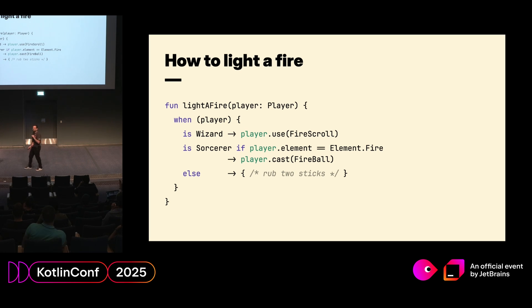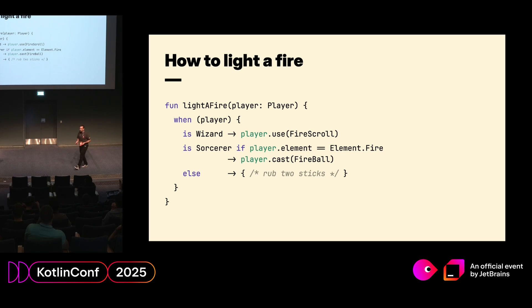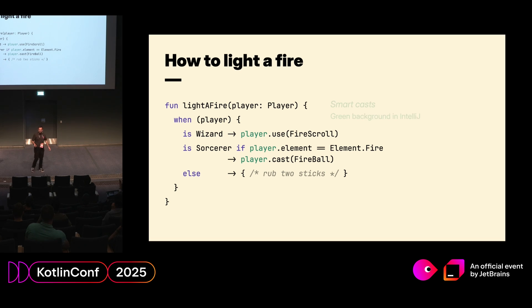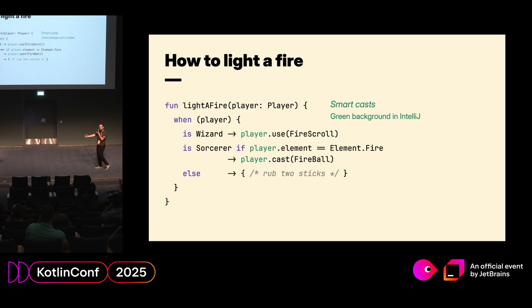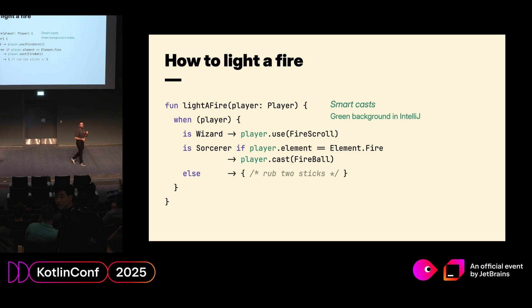That's how you light a fire if you are playing a Dungeons & Dragons campaign. If you're a wizard, you just take your fire scroll and use it. If you're a sorcerer and your element is fire, then there is fire. And otherwise, you rub two sticks. The green thing I'm showing is what you would see as a green background in IntelliJ — everywhere smart casting is happening, giving us visual feedback.